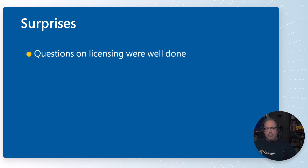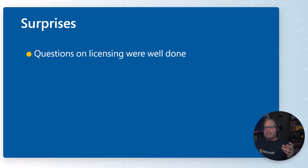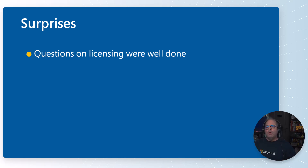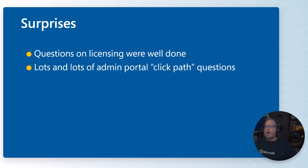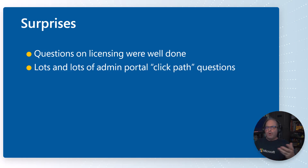One surprise: although I was really bummed to see licensing featured prominently, I found that the questions dealing with licensing were surprisingly well done. It's more about what you can or can't do with or without a Copilot license, as opposed to which SKU you need to unlock a feature. Unfortunately, AB900 also has plenty of trivia about which administration portal to go to for a given task. That can be pretty annoying, but the licensing coverage was actually quite reflective of real-world practice. There's lots of click-path stuff where you have to know your way around the portals.